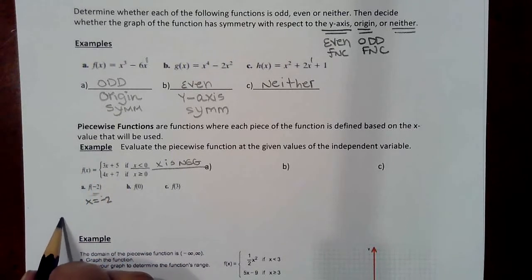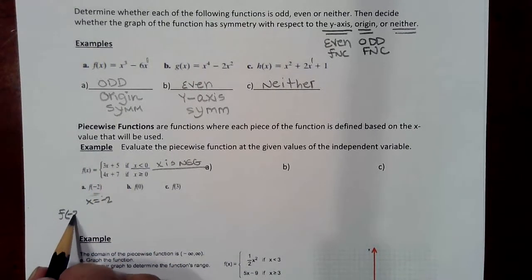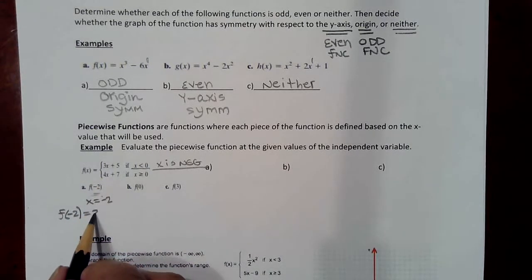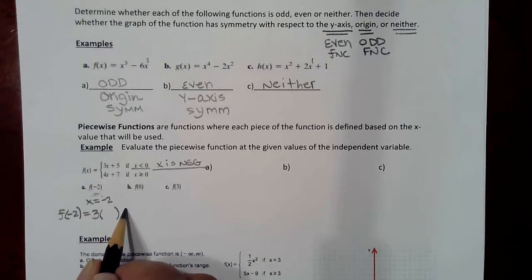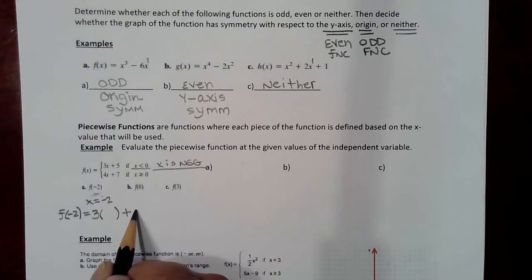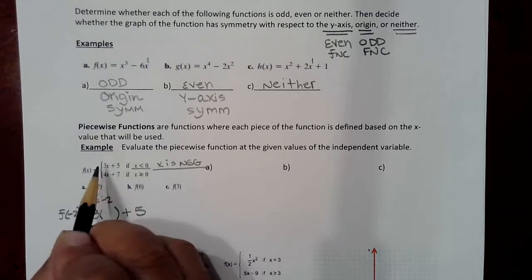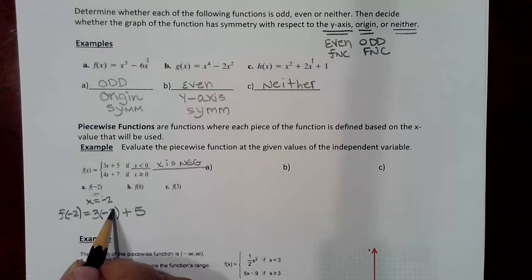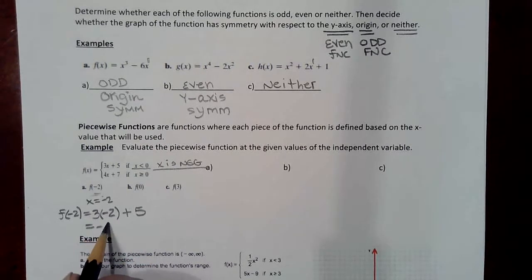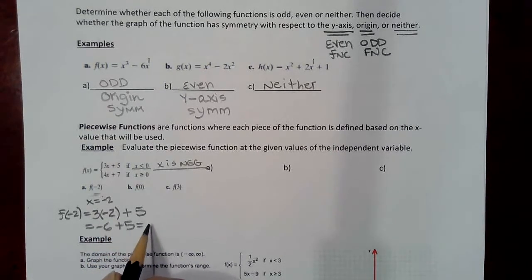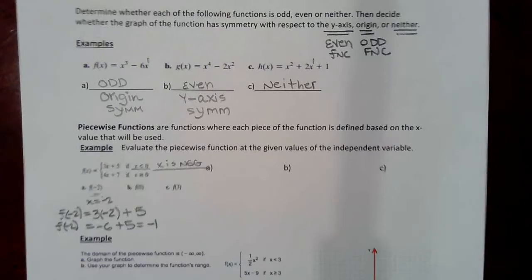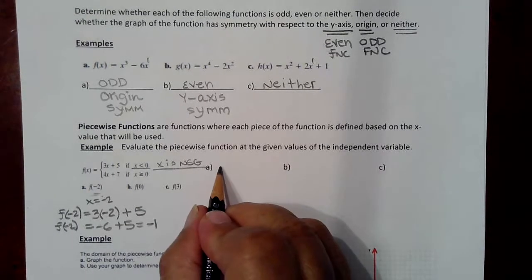So for f of negative two, I'm plugging negative two into the top piece, three x plus five. That gives three times negative two plus five, which is negative six plus five, equal to negative one. So the piecewise function evaluated at negative two is negative one.